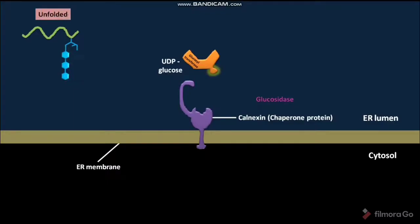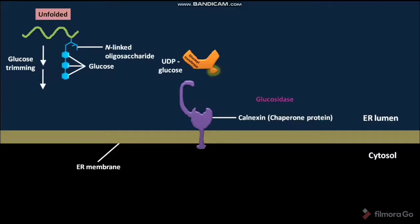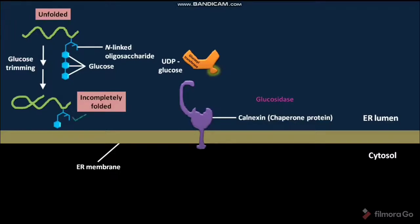In the ER lumen, the unfolded protein has an N-linked oligosaccharide having three glucose molecules. This luminal unfolded protein with N-linked oligosaccharide undergoes a process called glucose trimming, producing an incompletely folded protein with an N-linked oligosaccharide having only one terminal glucose molecule.